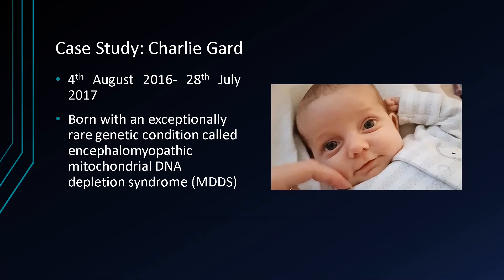His parents, Connie Yates and Chris Gard, wanted to pursue an experimental treatment called Nucleoside Bypass Therapy. But this had not been performed before, neither on animal nor human, with Charlie's condition or RRM2B deficiency. Instead, the treatment had been previously offered to patients with TK2 deficiency, a similar genetic disorder, and so Great Ormond Street Hospital applied for ethical permission to attempt nucleoside therapy on Charlie, on the basis of beneficence.